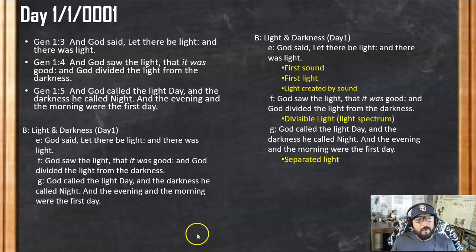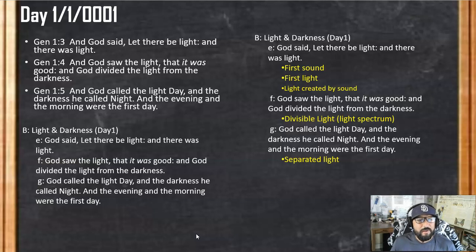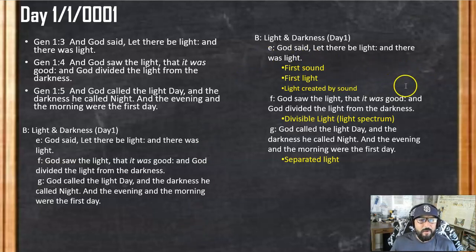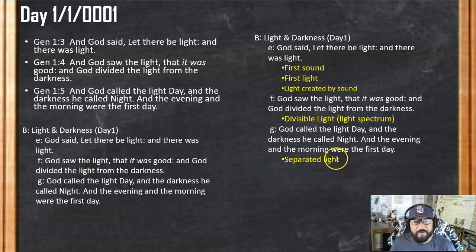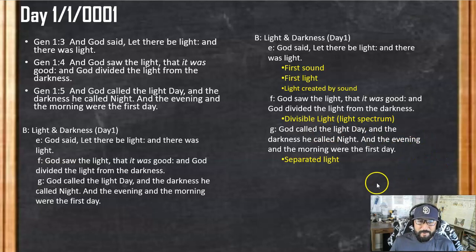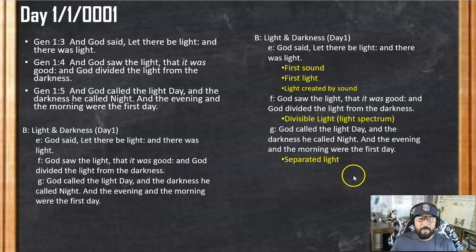Day one: God said, "Let there be light," and there was light. God saw the light that it was good, and God divided the light from the darkness. God called the light Day and the darkness he called Night, and the evening and the morning were the first day. So we've got the first sound and the first light — light created by sound. God divided the light from the darkness, giving us divisible light and the light spectrum. God called the light day and the darkness night, and the evening and the morning were the first day — the separation of light, light shining in the darkness.